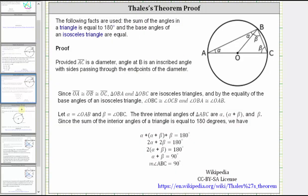For the proof, we'll use the fact that the sum of the interior angles of a triangle is equal to 180 degrees, and that the base angles of an isosceles triangle are equal. We are given that AC is a diameter of a circle and angle B is an inscribed angle with sides passing through the endpoints of the diameter. Since segments OA, OB, and OC are all congruent radii of the circle, triangle OBA and triangle OBC are isosceles triangles — triangle OBA is the obtuse isosceles triangle and triangle OBC is the acute isosceles triangle.